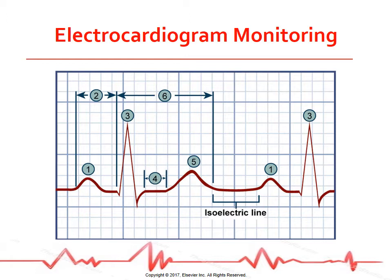The ST segment is measured from the S wave of the QRS complex to the beginning of the T wave. It represents the time between ventricular depolarization and repolarization, and should be isoelectric or flat. The T wave represents the time for ventricular repolarization and should be upright. The QT interval is measured from the beginning of the QRS complex to the end of the T wave and represents the time taken for entire electrical depolarization and repolarization of the ventricles.